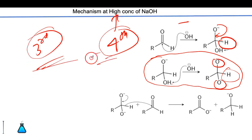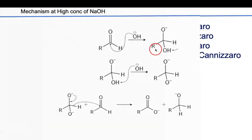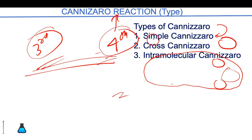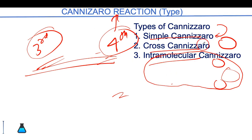Let's discuss the types of Cannizzaro reaction. There are basically three types: first is simple Cannizzaro, second is cross Cannizzaro, and third is intramolecular Cannizzaro reaction. These are the three types of Cannizzaro reaction which are observed.